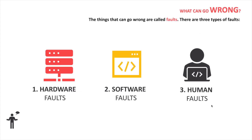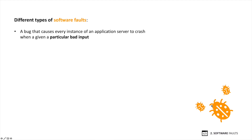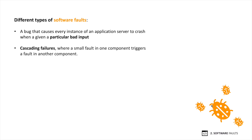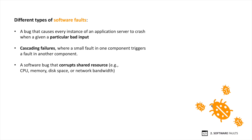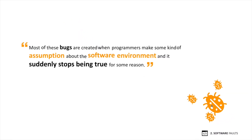Let's look at software faults next. Software faults are generally harder to anticipate and can cause broader damage to the overall system because they are correlated across nodes. Here are different types: a software bug caused by a particular bad input, cascading failures where a small fault in one component triggers a fault in another, a software bug that corrupts shared resources, or a service that slows down and becomes unresponsive. Most of these bugs are created when programmers make assumptions about the software environment that suddenly stop being true.